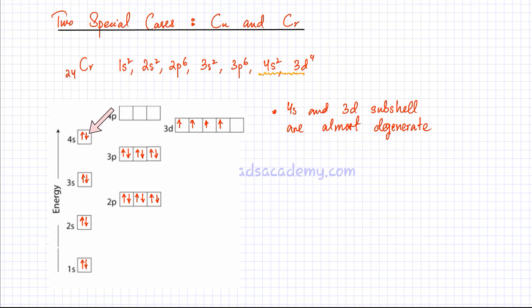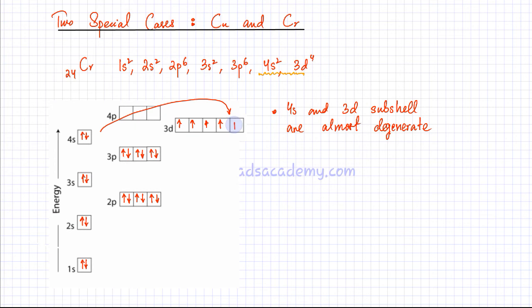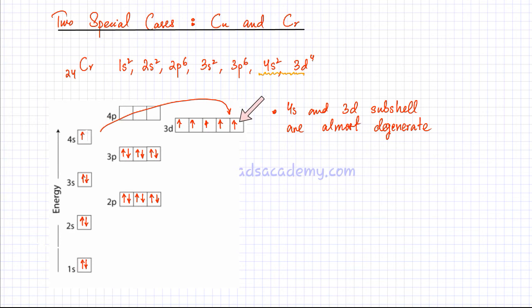So one electron would jump from the 4s and go to occupy the empty 3d orbital. One electron from the 4s jumps and occupies the empty 3d orbital. So there is one electron moving from the 4s — I am going to rub the electron at that position. This happens mainly because of repulsion: there are 2 paired electrons in the 4s and it would be easier for that electron to go and occupy the empty 3d orbital. This is what happens in chromium's case.